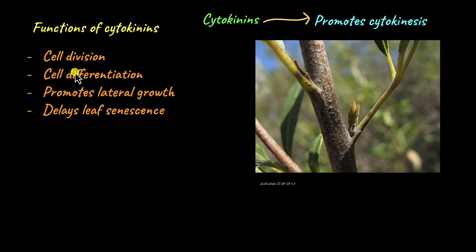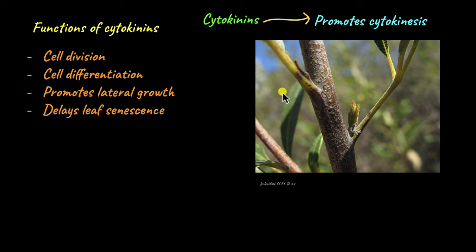Cytokinins are involved in cell division and differentiation, which is why they are often found in greater quantities at young parts of the plant like shoot buds and flower buds. Cytokinins, unlike auxins, promote lateral growth — when the lateral meristems grow and a new branch or new flower emerges. So auxins act on the apical meristem causing the shoot to become longer, while cytokinins act on the lateral meristems and promote lateral growth.